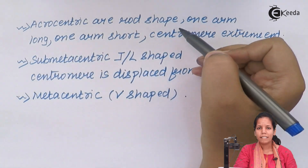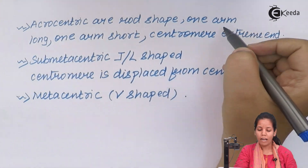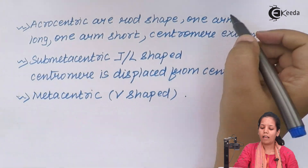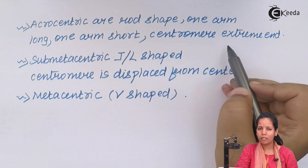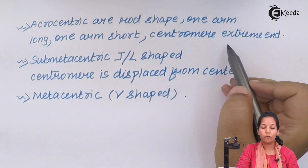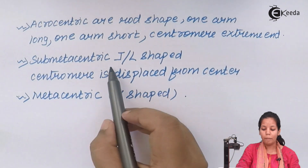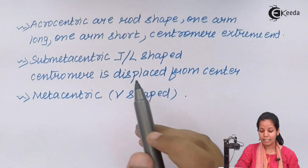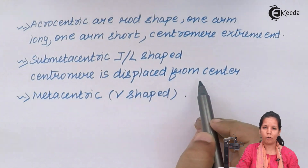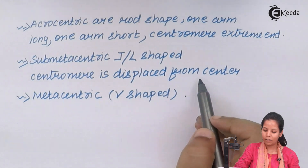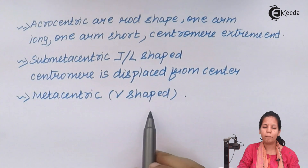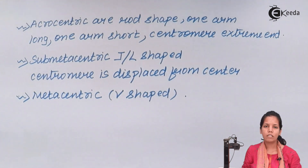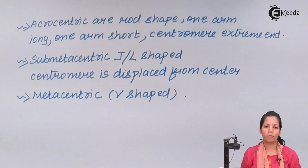Acrocentric chromosomes are rod-shaped with one long arm and one short arm, and the centromere is towards the extreme ends. Submetacentric chromosomes are J-shaped or L-shaped and the centromere is displaced from the center. Lastly, metacentric chromosomes are V-shaped. In this part of the chapter we studied different kinds of chromosomes and their centromere positions.